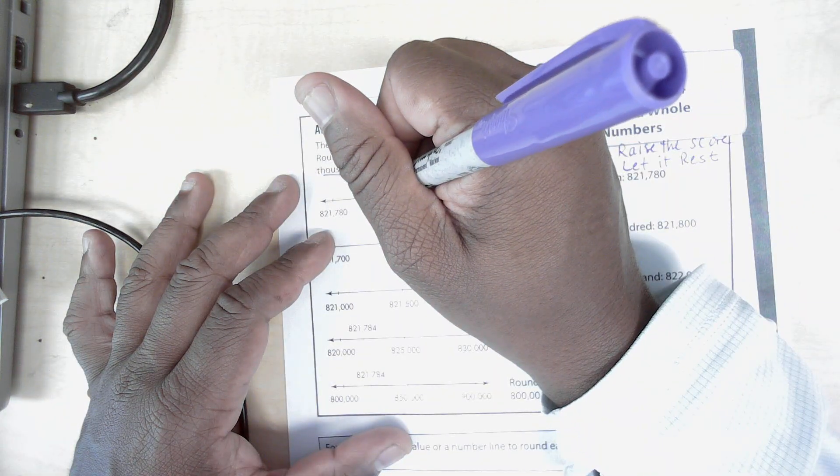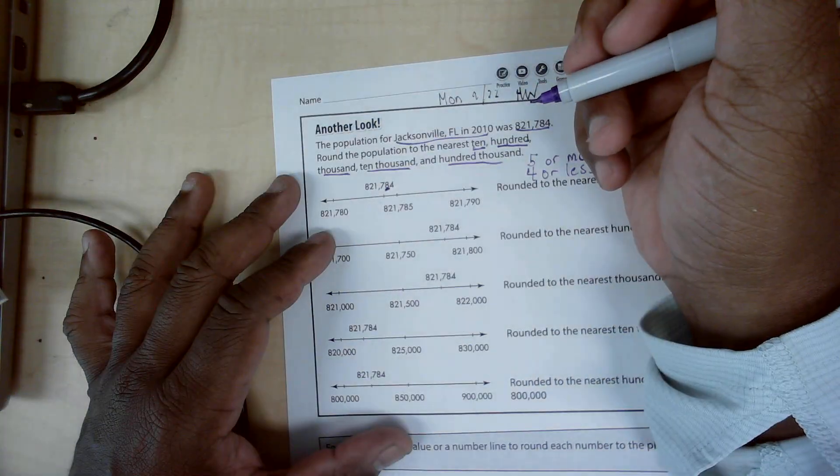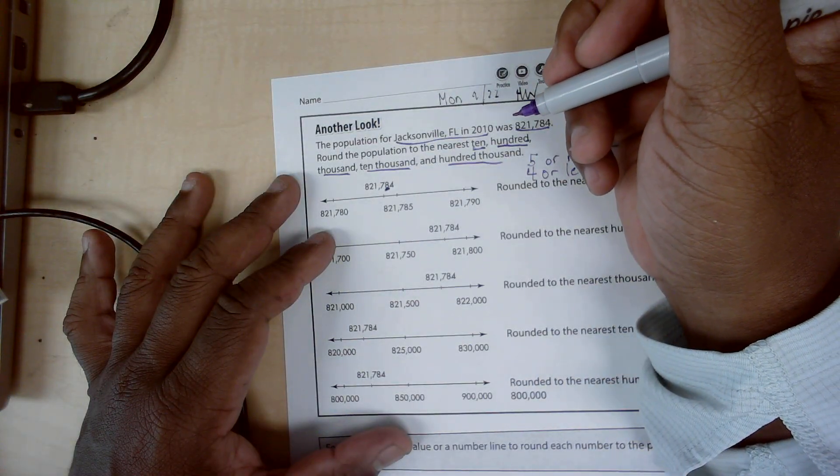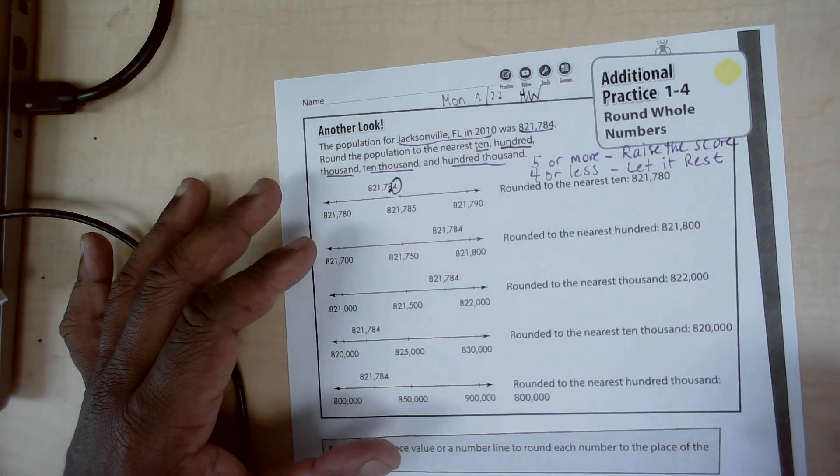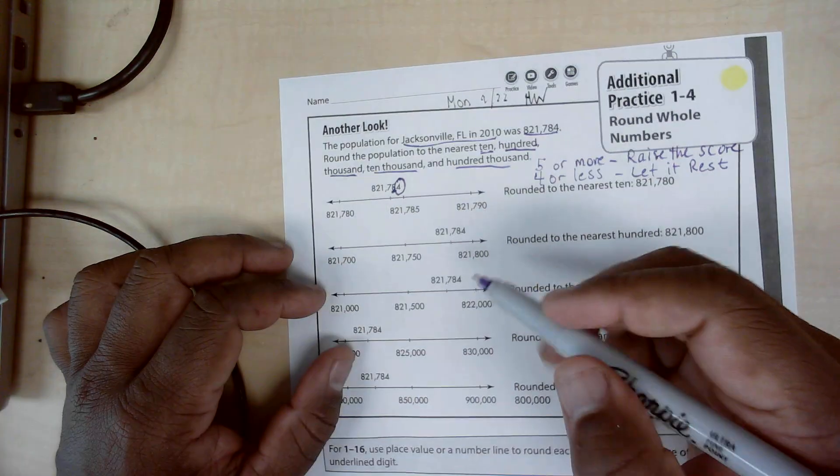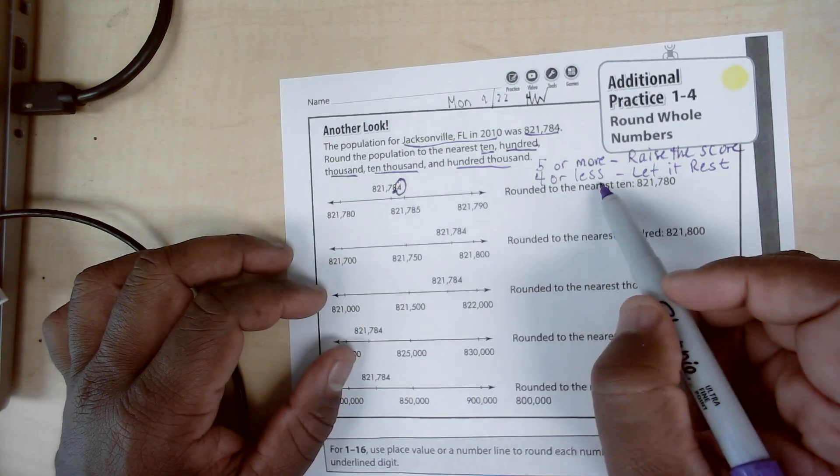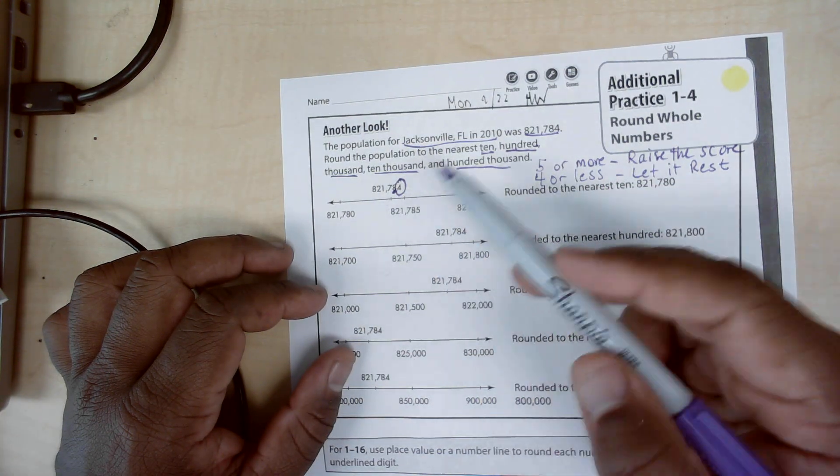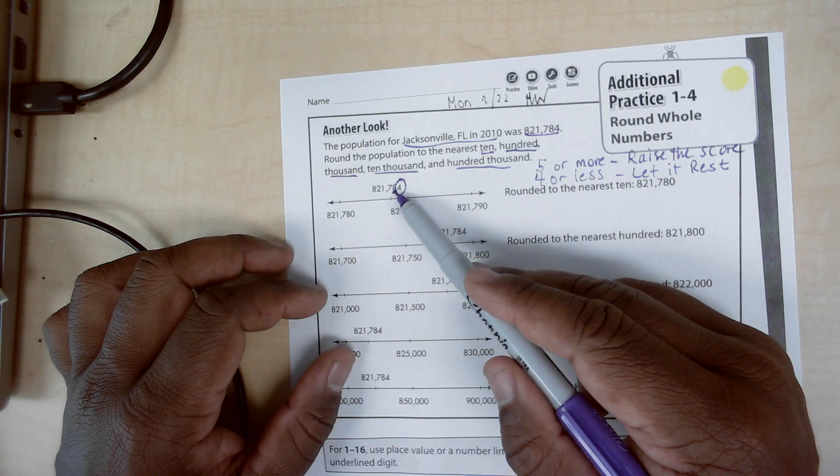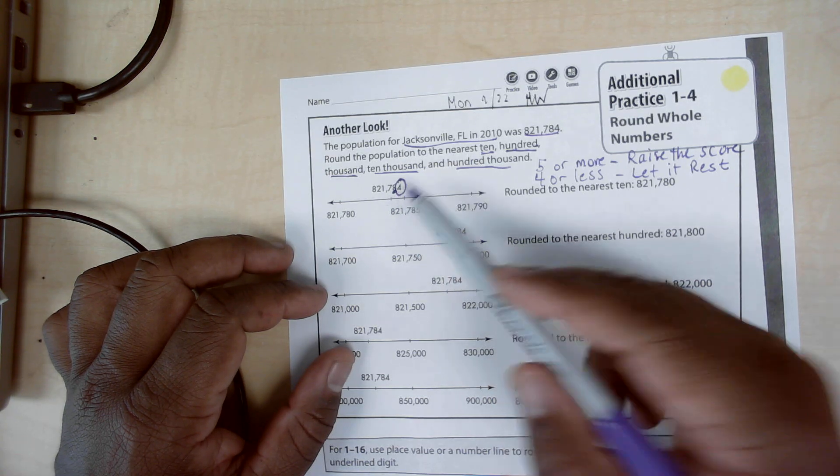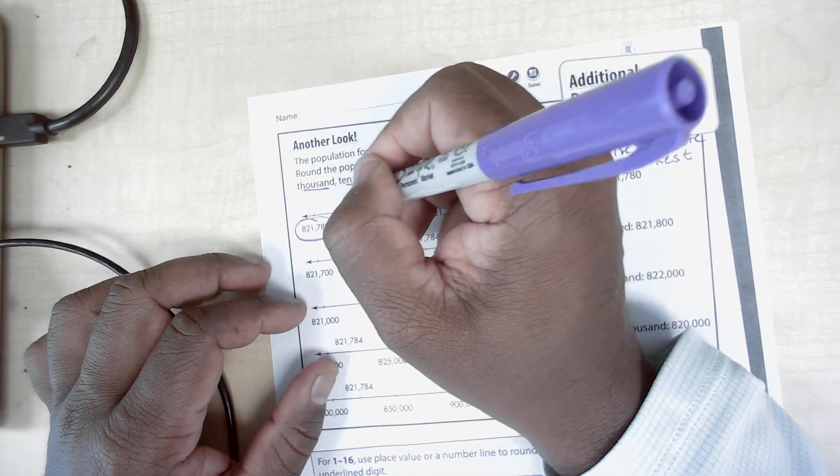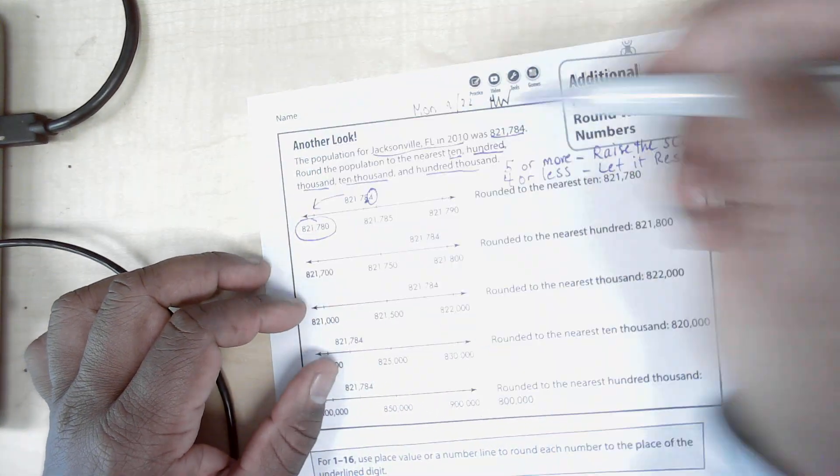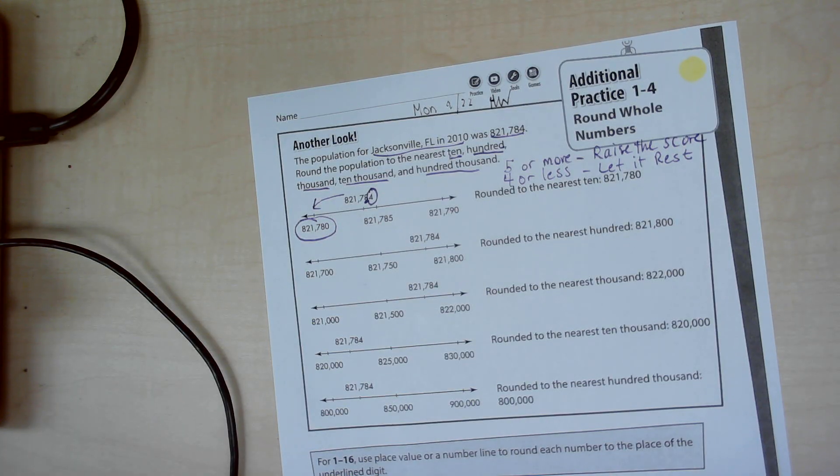We look at the eight, and then what we do is we look at the digit to its immediate right and we circle it, which is a four. So if the one we circle, if it's four or less, then that digit that we underline will rest. So 821,784 rounds to 821,780.